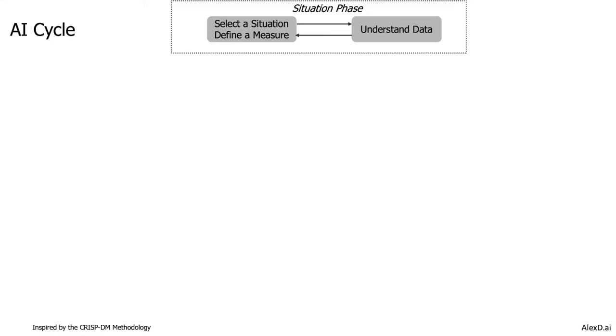But if the situation is okay and you have the right data — or can get that data — then it's time to define a measure: how you will measure the value at the end of your project. Defining the situation and the measure are the deliverables of this first phase, the situation phase.